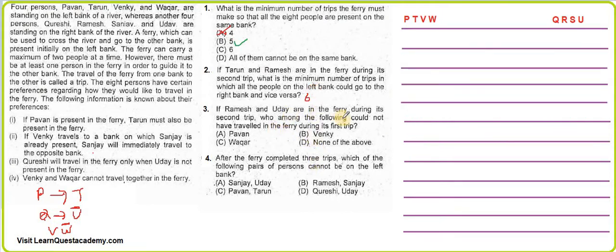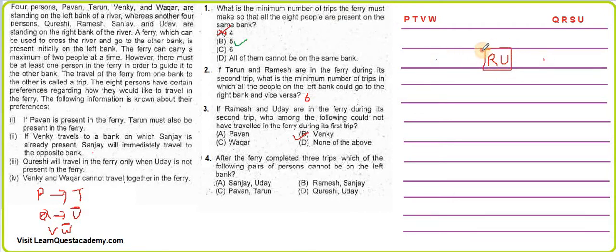Third question: if R and U are in the ferry during the second trip (traveling right to left), who among the following could not have traveled during the first trip? The answer is V. By the second rule, if V had traveled to the right in trip one, then when V arrived, S was on the right, forcing S to return immediately. But S is not returning — only R and U are in trip two. So V could not have traveled in the first trip. Answer: option B.